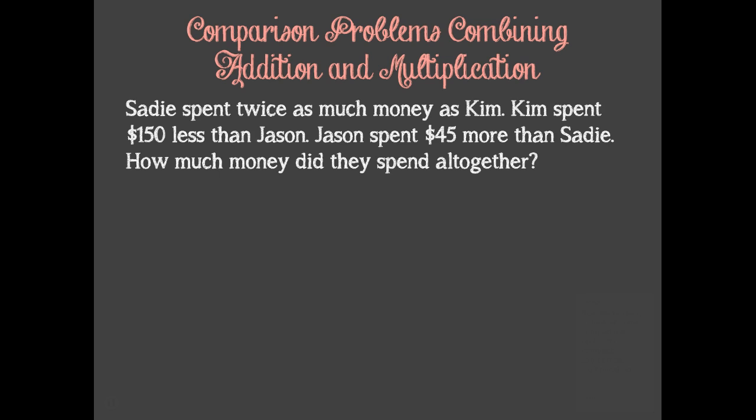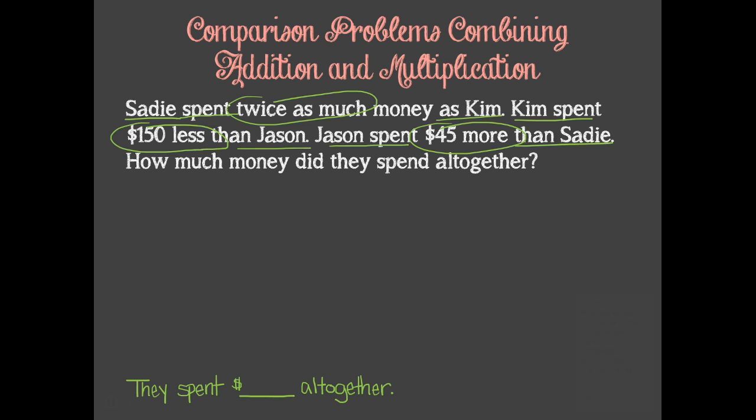Now we're ready to look at some comparison problems combining addition and multiplication. Sadie spent twice as much money as Kim. Kim spent $150 less than Jason. Jason spent $45 more than Sadie. How much money did they spend altogether? First, we should rewrite the question in sentence form in order to maintain our focus. They spent blank dollars altogether. When re-reading the problem, we identify the important information we need to solve the problem. Where should we start with this problem?